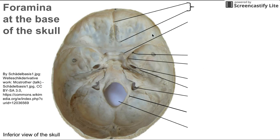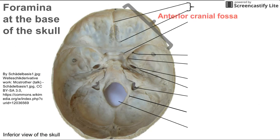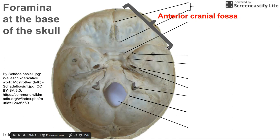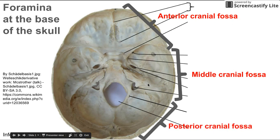First of all, here we have this image of the inferior view of the skull, and we're going to break it down into three major sections. We have the anterior cranial fossa — you can see that big outline of the anterior fossa up there, with two halves, a left and a right. Next is the middle cranial fossa, and lastly is the posterior cranial fossa, the large back end of the skull in which the cerebellum fits.